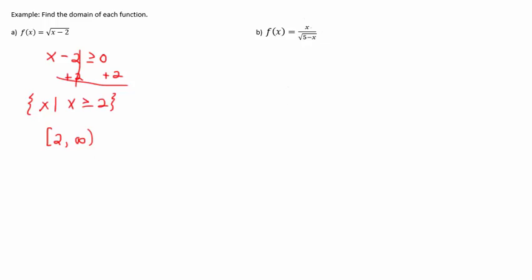Now in b, I do have a square root and so I am going to still take that and set it as a relationship with zero, but if it's on the bottom of a fraction it cannot equal zero, so I just would not put the equal sign. Because where the bottom is zero gives me an error.